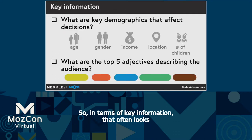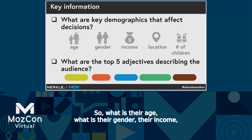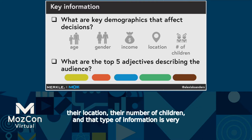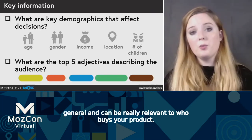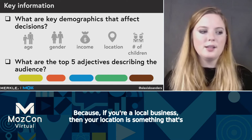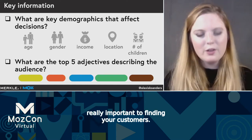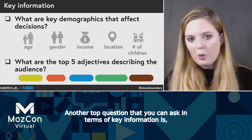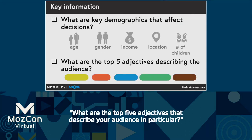In terms of key information, that often looks like demographics — age, gender, income, location, number of children. That type of information is very general but can be really relevant to who buys your product. Because if you're a local business, location is something really important to find your customers. Another top question you can ask is: what are the top five adjectives that describe your audience in particular?